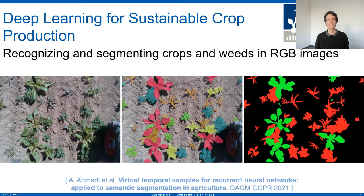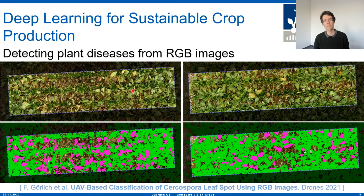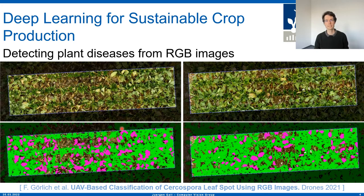Another example where deep learning is used is recognizing symptoms of diseases as early as possible. This work has been done by the group of Anne-Kathrin Marlein. Here we see an image of sugar beet, and the goal is to recognize the pink parts, which correspond exactly to where we have early symptoms of a disease.